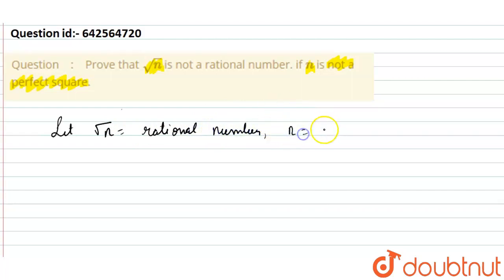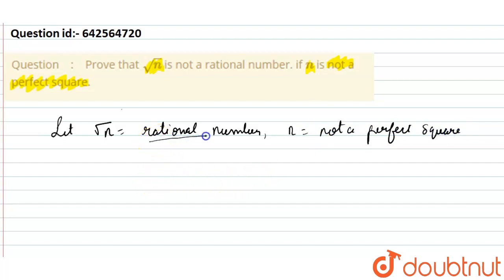And n is not a perfect square. So if I prove that this rational number assumption leads to a contradiction — meaning if √n is not a rational number, then by default it will be an irrational number. So I am proving by contradiction.